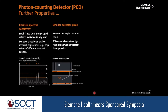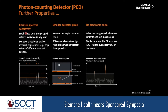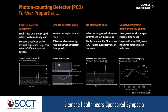Summarizing the properties and benefits of a photon counting CT detector: intrinsic spectral sensitivity allowing derivation of all spectral data; always available high resolution capability; no electronic noise since only pulses above a threshold are counted; and no down-weighting of low energy quanta — they equally contribute to the signal, unlike traditional energy integrating detectors where high energy quanta contribute disproportionately more.